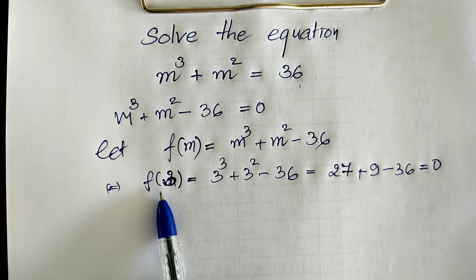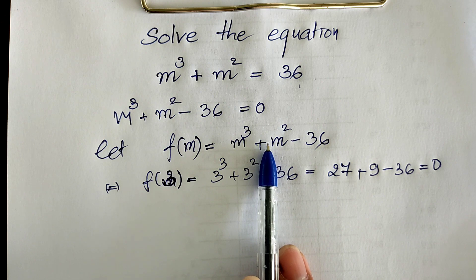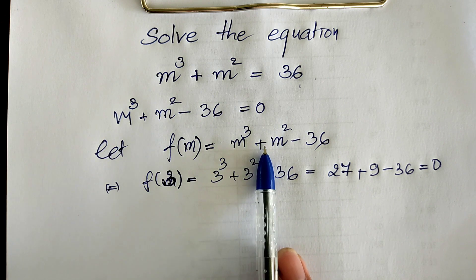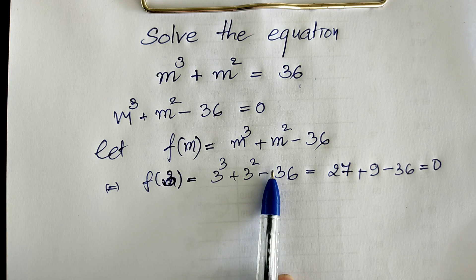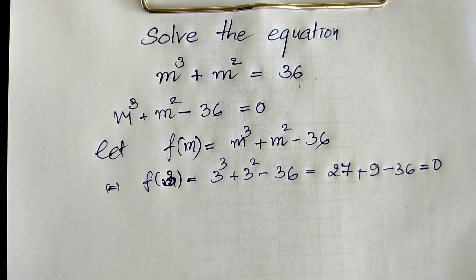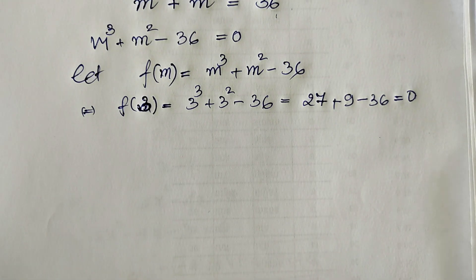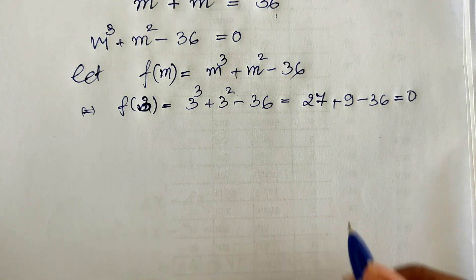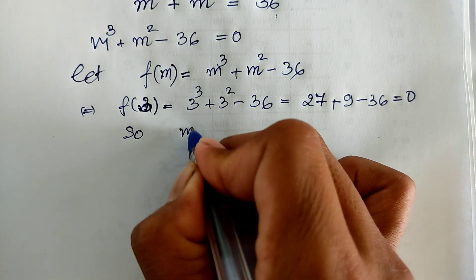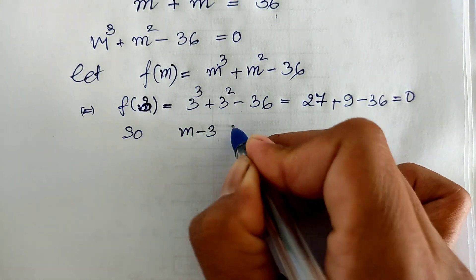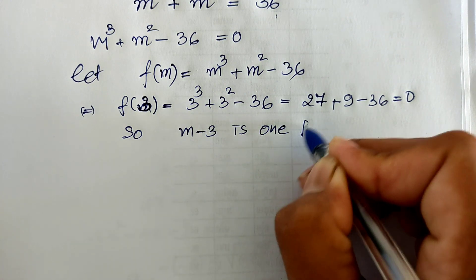We see that if we replace 3 in our function it equals 0, so we get m minus 3 as one factor of our function. So f of m equals m minus 3 multiplied by another function.